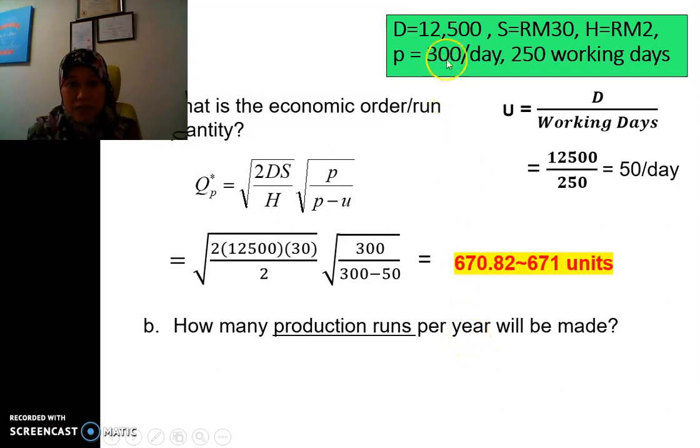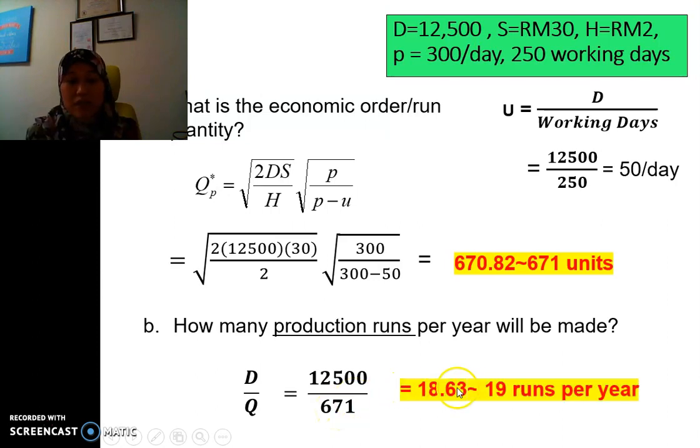So the demand is 12,500, and the Q is 671, and remember how many times that we have to make the order. It's the demand per year divided by the Q, and we have to make about 19 runs, meaning 19 times that we have to make order for the sub-component.